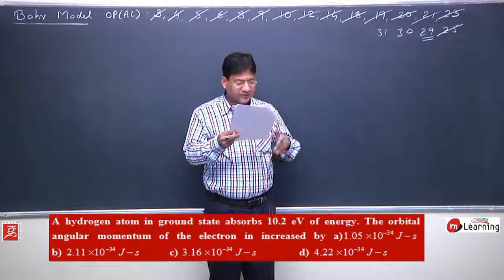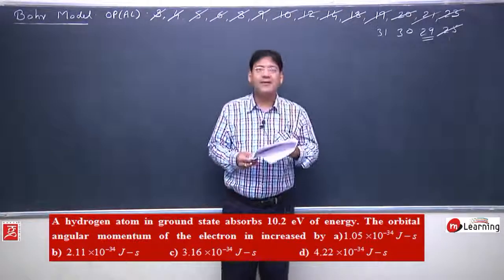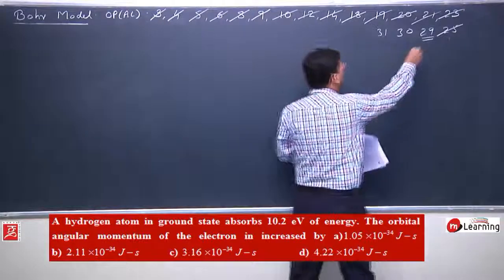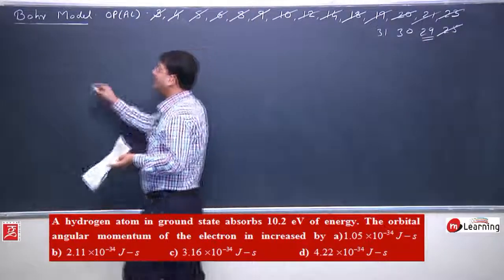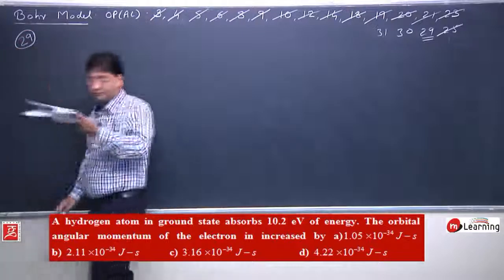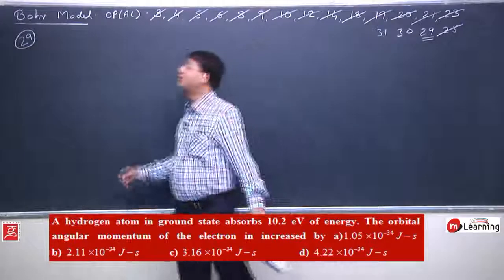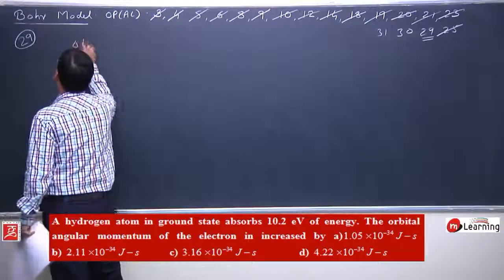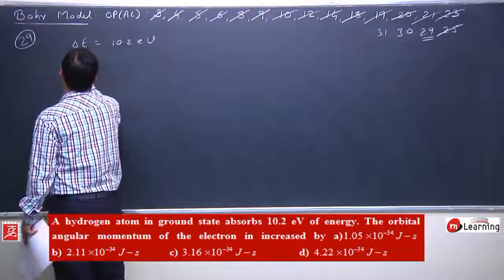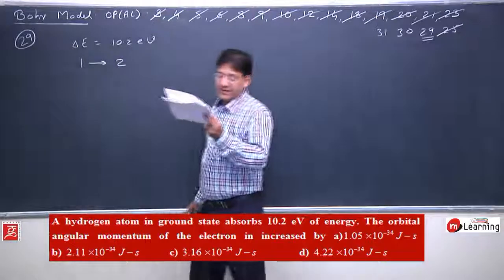Let me continue from the last stop of this lecture. I will start with the 29th objective. Hydrogen atom in ground state absorbs 10.2 eV energy. By absorbing 10.2 eV, we know very well that the electron will move from the first orbit to the second orbit.